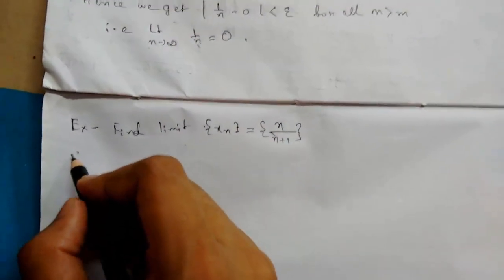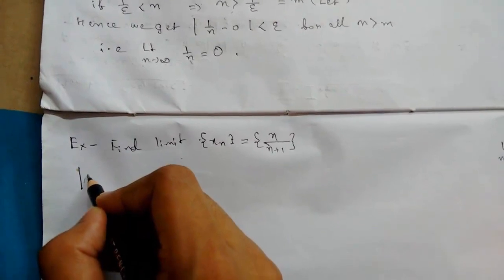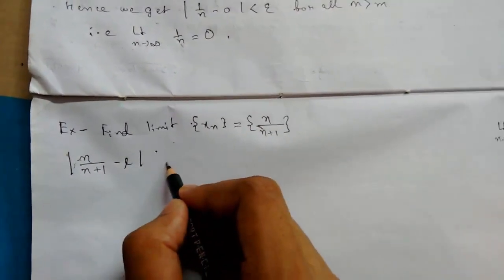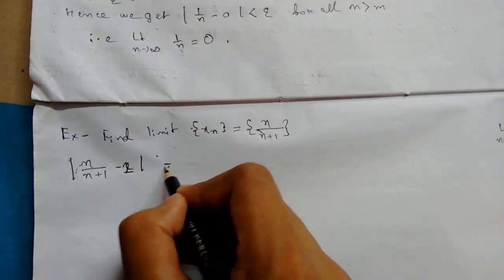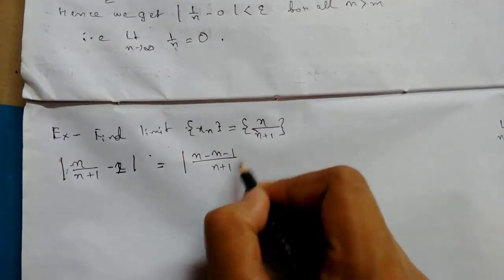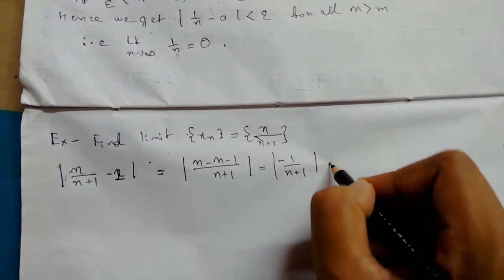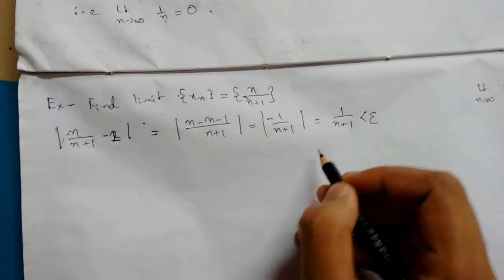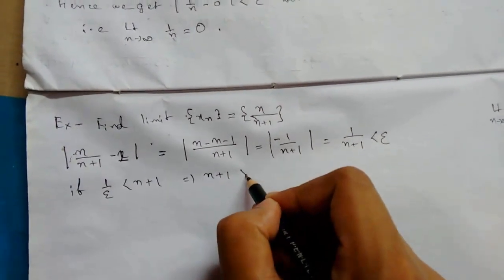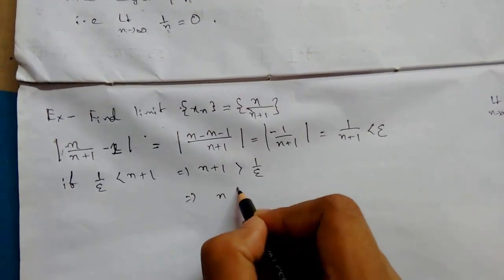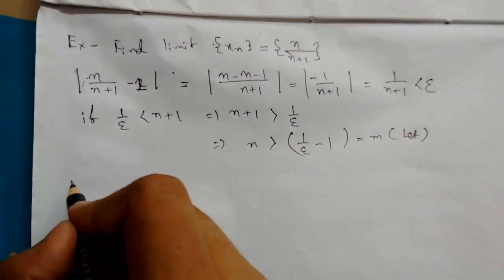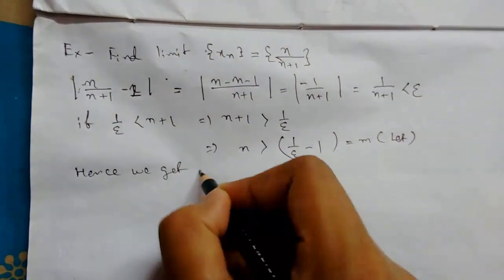Now we write the formal form: |n/(n+1) − L| = |n/(n+1) − 1|. Clearing the modulus and taking the LCM over n+1, this simplifies to |−1/(n+1)| = 1/(n+1) < ε. Now check the condition: if 1/ε < n+1, then n+1 > 1/ε, so n > 1/ε − 1. Let M = 1/ε − 1.